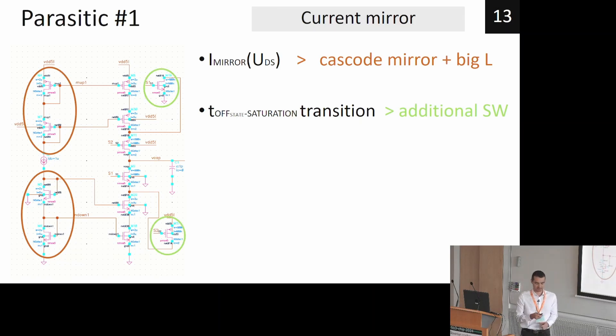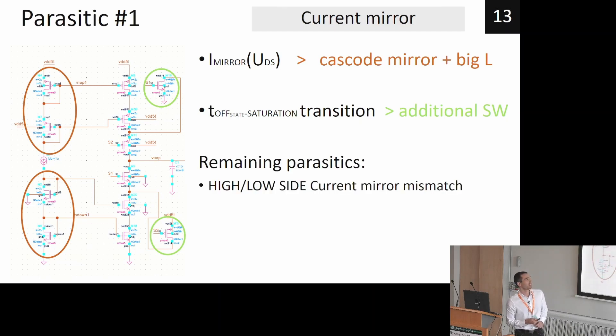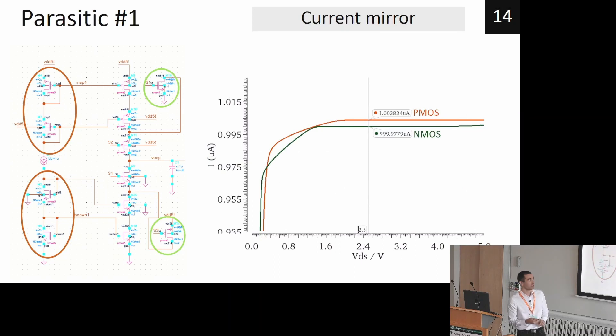using conditional switches. The remaining parasitic are the high-low side current mirror mismatch, which can be seen here. The characteristic of current PMOS and NMOS current mirrors are different, of course.